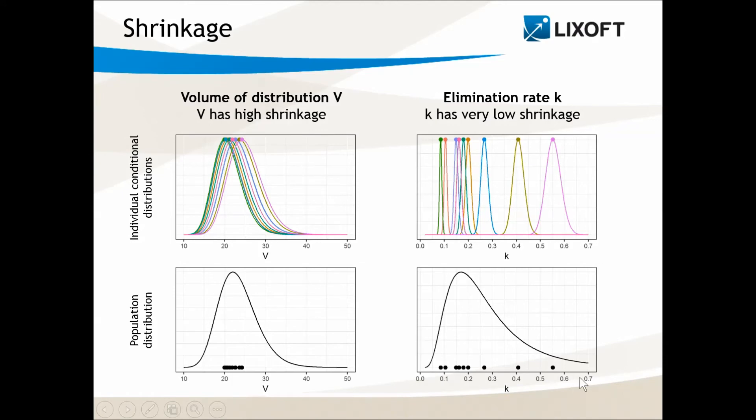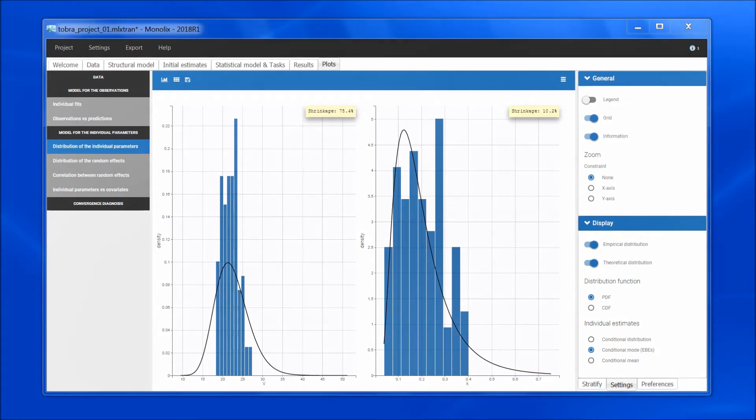If we pull these values together and draw a histogram, we get something like this. This is the individual parameter distribution plot that can be seen in Monolix. The histogram of individual parameter values is in blue, and the theoretical population distribution is in black. The shrinkage is low for the elimination rate, and the values are nicely spread over the entire population distribution.